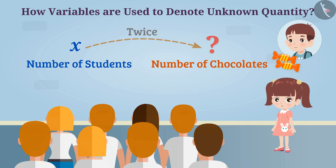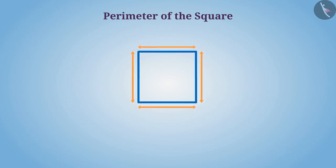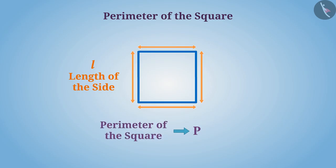Now let's understand how variable help us to express mathematical rules and formulas in general way. Perimeter of the square: the perimeter of the square is sum of lengths of all its sides. If we use the variable l for the length of the side and variable p for the perimeter, then the perimeter of the square can be expressed as p is equal to 4 multiplied by l, or 4l.